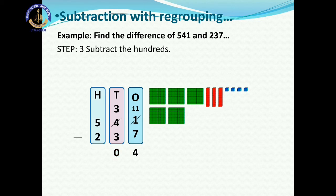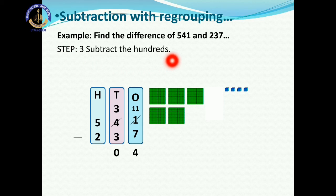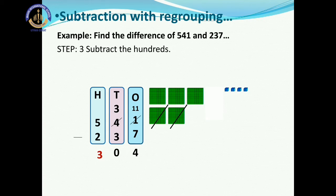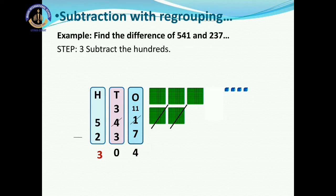Step 3 is subtract the hundreds. How many hundreds do we have? 5 minus 2. Cut 2 from the hundreds — that leaves 3 hundreds. So, our answer: 541 minus 237 is equal to 304.